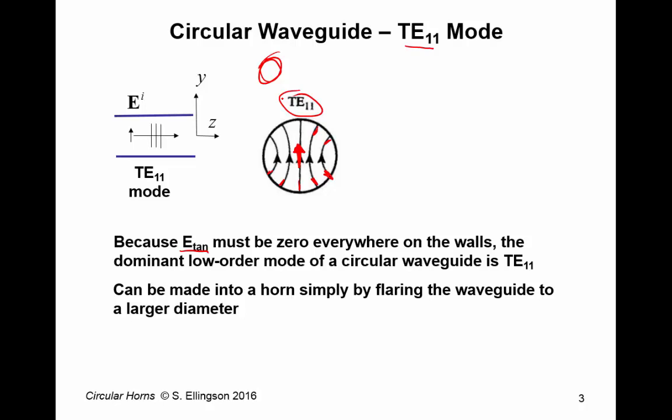Now, we can make a waveguide carrying a TE-1-1 mode into a horn simply by flaring it out. And this is the usual deal. We have the field in the waveguide, and then we flare it out.